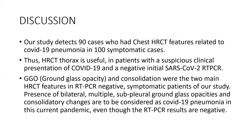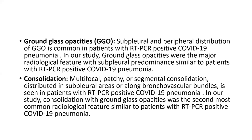Ground glass opacities and consolidation are the most common HRCT features in RT-PCR positive patients as well, with the most common location being subpleural and peripheral, followed by the centroparenchymal location. Similarly, our study also detected ground glass opacities and consolidation in subpleural and centroparenchymal locations, similar to RT-PCR positive cases. Therefore, the presence of ground glass opacities and consolidation in symptomatic patients, even if RT-PCR negative, should be treated as COVID-positive pneumonia as per our study.